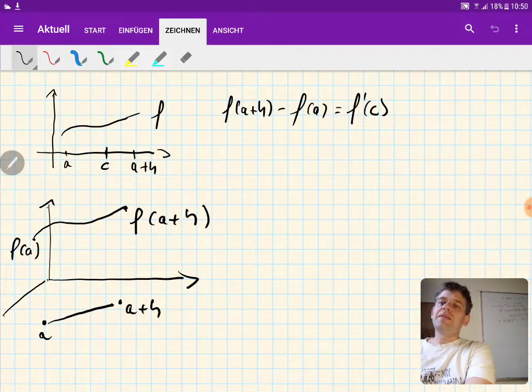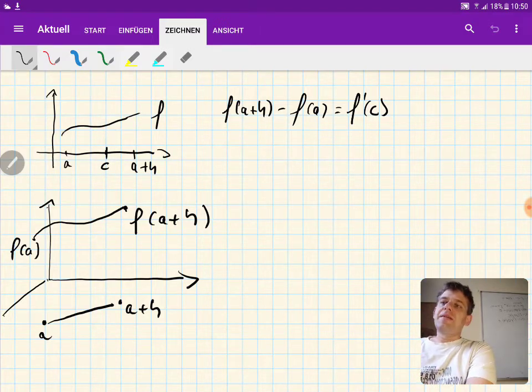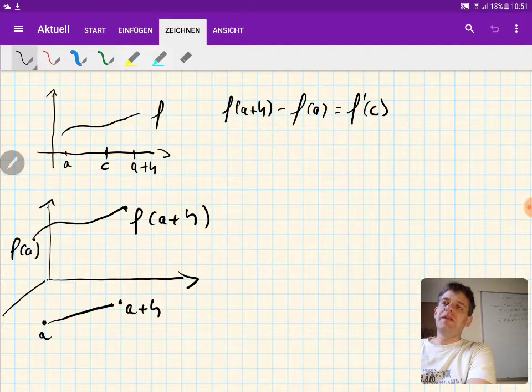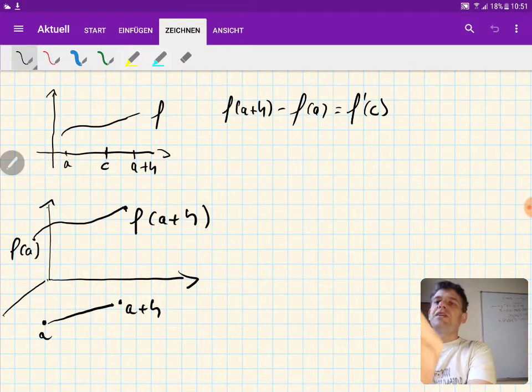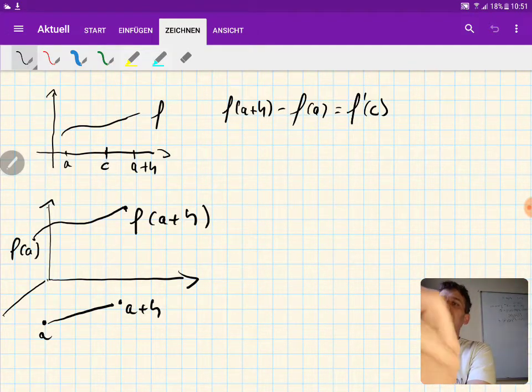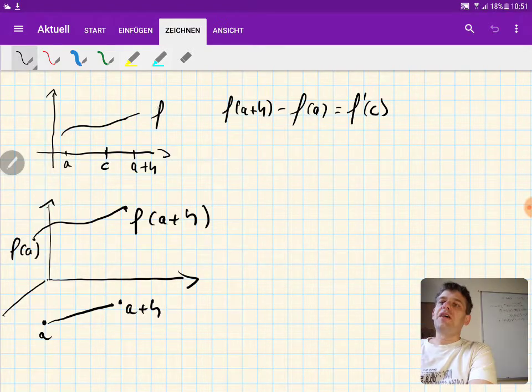Then the single variable version of the mean value theorem tells us that between a and a plus h you can always find a point c. This might be here in our picture, but you can always find such a point c such that if you evaluate the derivative of f at the point c